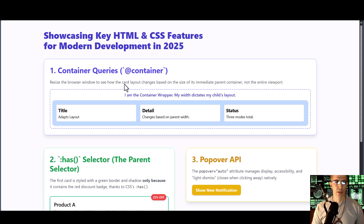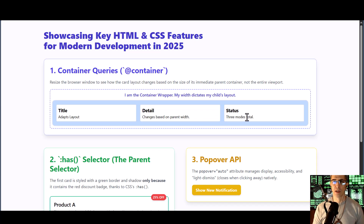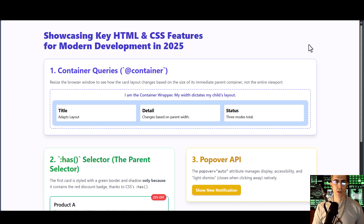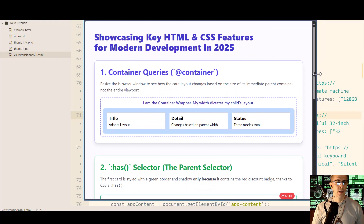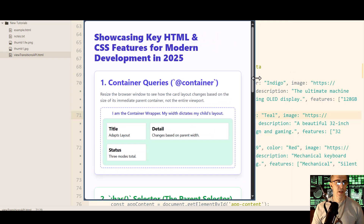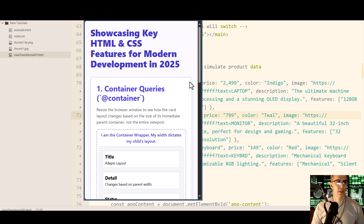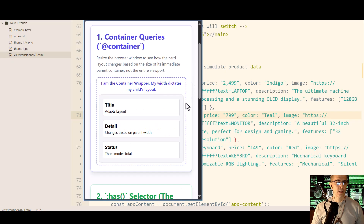The first one is the container query. We resize the browser window to see how the card layout changes based on the size of its immediate parent container and not the entire viewport. This feature has matured, allowing components to style themselves based on the size or style of their parent container rather than just the viewport, which is important for truly reusable, modular user interface components.